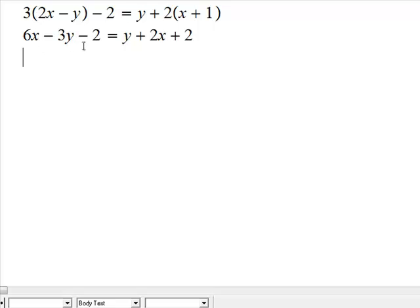Now, the like terms are already combined. Now, we have to solve for y, so what we would do? We will bring everything containing y on this side and take everything else to the other side.